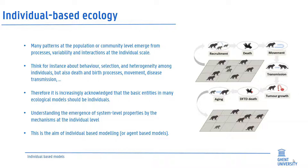Many patterns at the population or community level emerge from processes, variability and interactions at the individual scale. Think for instance about behavior, selection and heterogeneity among individuals, but also death and birth processes, movement, and disease transmission. Therefore it is increasingly acknowledged that the basic entities in many ecological models should be individuals. Understanding the emergence of system-level properties by the mechanisms at the individual level is thus the aim of individual-based or agent-based modeling.